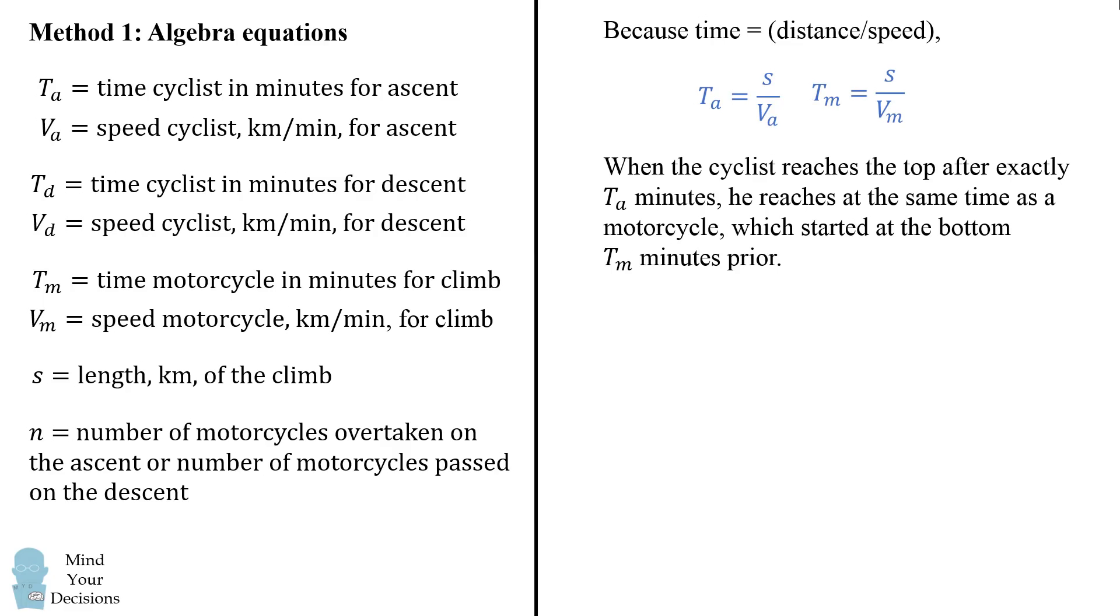When the cyclist reaches the top after exactly ta minutes, he reaches at the same time as a motorcycle which started at the bottom tm minutes prior. Hence the last motorcycle to pass the cyclist on the way up started the race at the minute mark ta minus tm.